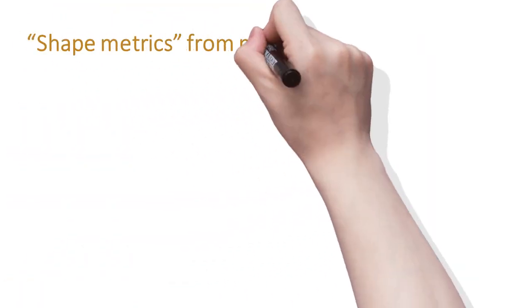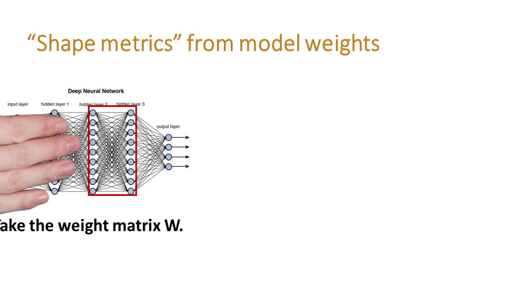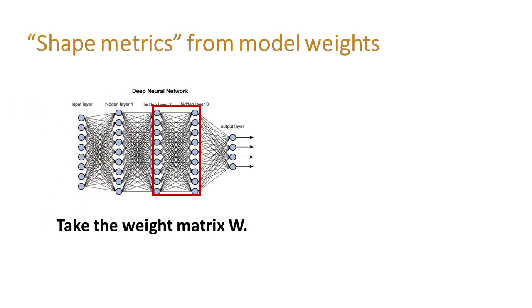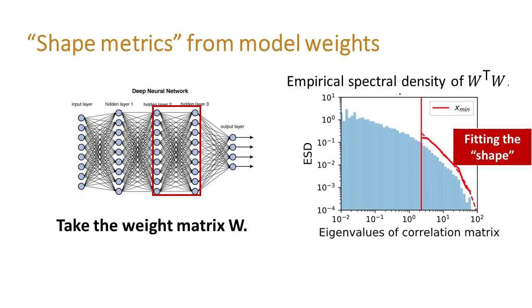In this work, we show that model weights are all that you need. You can start by taking the weight matrix of a language model, then fit a heavy-tail distribution on the histogram of its eigenvalues.